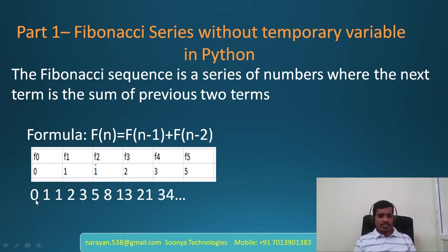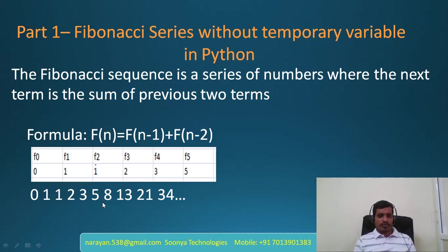Fibonacci sequence starts with 0 and 1. Here 0 plus 1 gives the next term 1, then 1 plus 1 gives 2, then 1 plus 2 gives 3, and so on. Here we will use swapping logic. We will discuss this logic over Visual Studio.